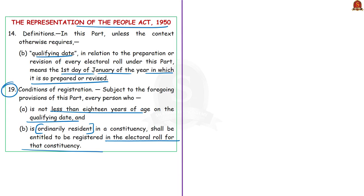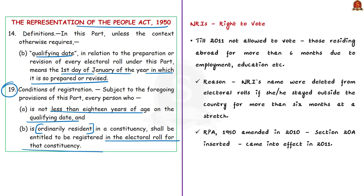Now what about non-resident Indians, because they are also Indian citizens? Till the year 2011, non-resident Indians and other Indian citizens residing outside India for more than six months — for reasons like employment, education, and other valid reasons — were not allowed to vote. According to this article, the reason was that the names of non-resident Indians were deleted from electoral rolls when these persons stayed outside the country for more than six months at a stretch.